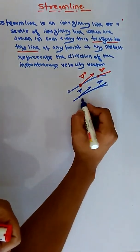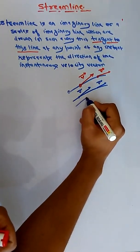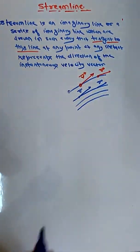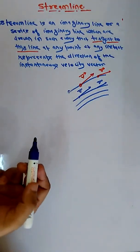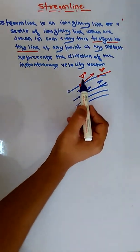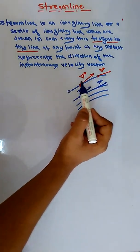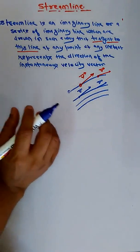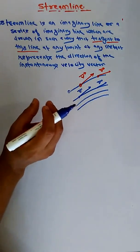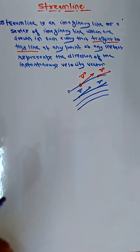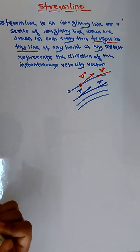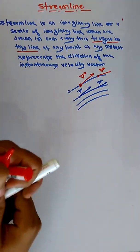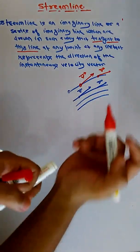Anywhere you can describe: if the fluid is flowing like this and if you draw a tangent it will represent the direction of the velocity vector, then the line is termed as a streamline. The flow field or flow pattern is then called the streamline flow pattern.